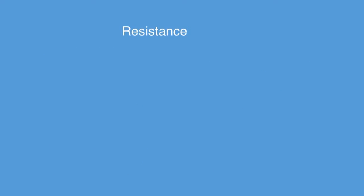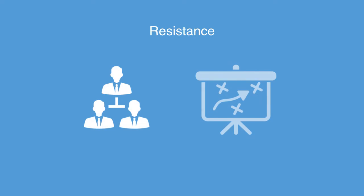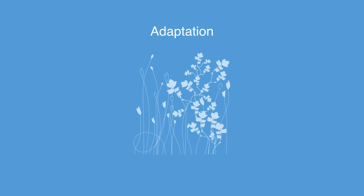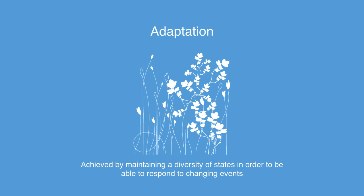Resistance as a strategy is part of a command-and-control approach that tries to achieve stability through controlling and regulating the environment towards the required parameters conducive to the system's functionality. Adaptation tries to achieve this instead by maintaining a diversity of states in order to be able to respond to changing events. These two approaches are fundamental to the dynamic between socio-ecological systems of all kinds.